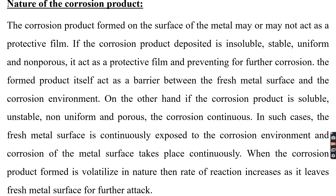The second factor that decides the rate of corrosion is the nature of the corrosion product. The formed product itself can act as protective or non-protective, and a protective layer acts as a barrier between the underlying metal surface and the corrosion environment. If the corrosion product is insoluble, stable, uniform, and non-porous, it will act as a protective layer preventing further corrosion.